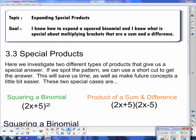Here we're investigating the two different types of products that give us a special answer. If we spot the pattern we can use a shortcut and get the answer. This will save us time as well as make future concepts a little bit easier. So these are the two special cases.